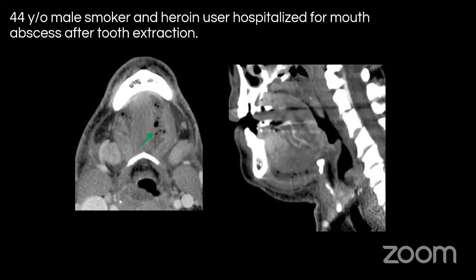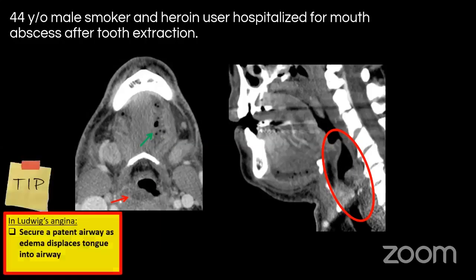Here is another case of Ludwig's angina. You can see the abscess in the floor of the mouth. Look carefully at the airway: there is edema in the aryepiglottic fold and right paraglottic space, and the airway is getting partially effaced from the right side — even though the collection is on the left, it displaces the tongue, reaches the paraglottic lesion and aryepiglottic folds, and can result in airway compromise. You can lose the patient from airway compromise, not from the infection itself. Mnemonic: A-angina, A-airway, A-aspiration pneumonia.